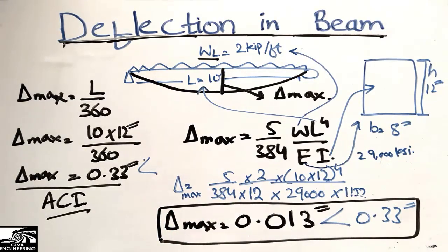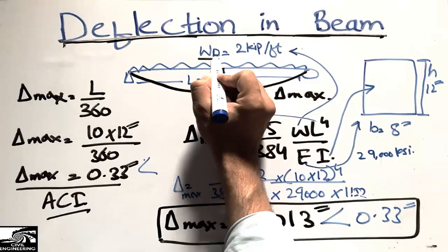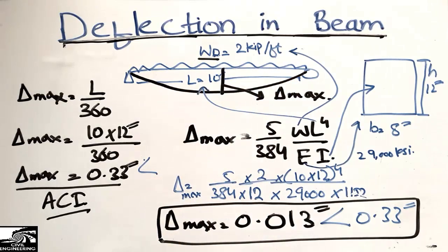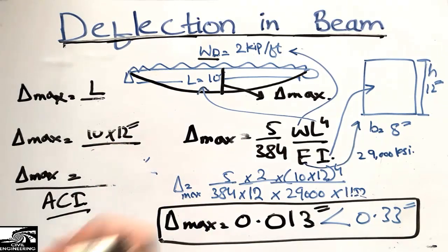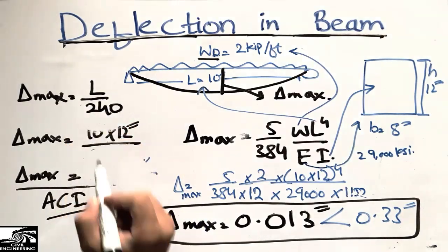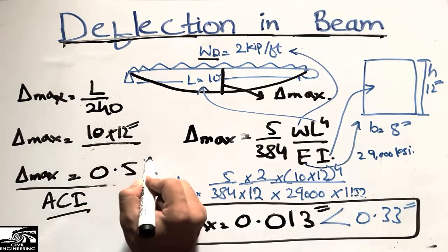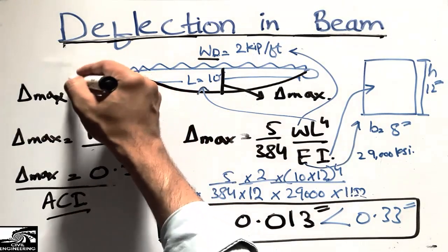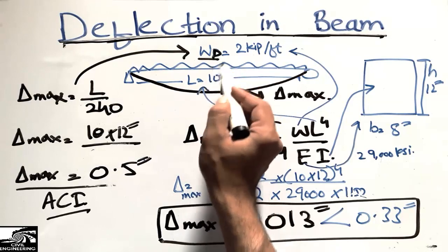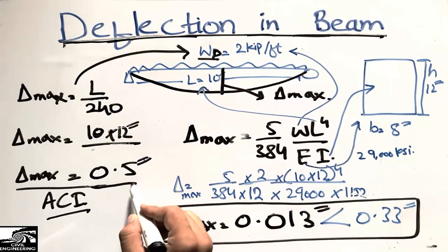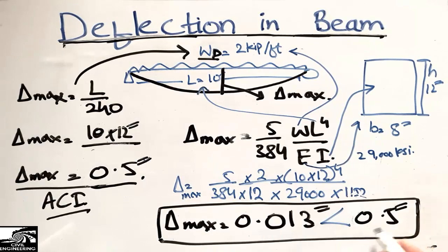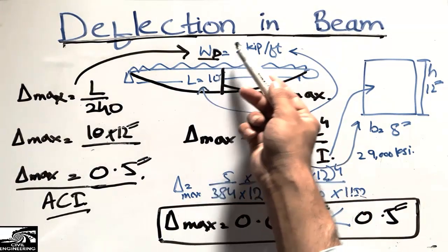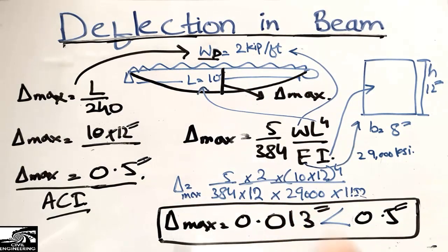Now considering a dead load of 2 kip per foot on the same beam: the dead load deflection limit per ACI is L/240. With L = 120 inches, the allowable deflection is 120/240 = 0.5 inches. Our calculated deflection is less than 0.5 inches, so the beam is also safe under dead load per ACI deflection limits.